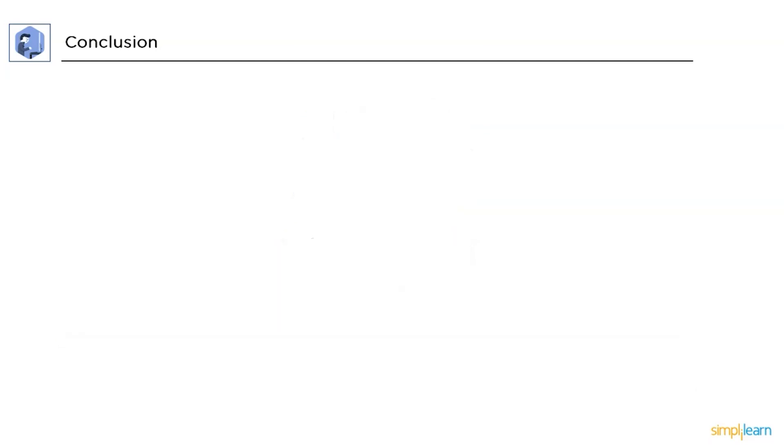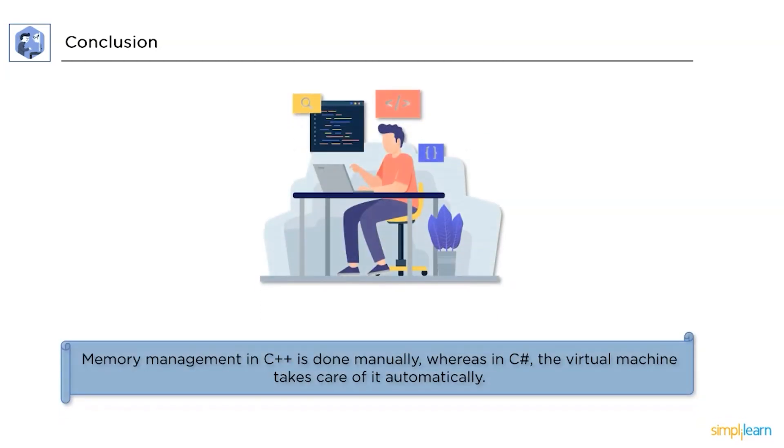Finally, the memory management in C++ is done manually. Whereas, in C Sharp, the virtual machine takes care of it automatically.